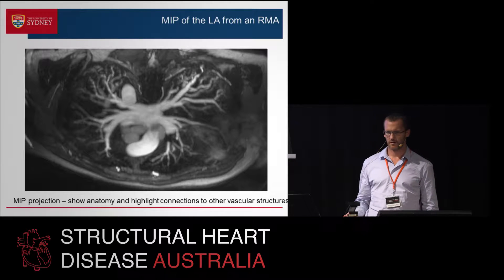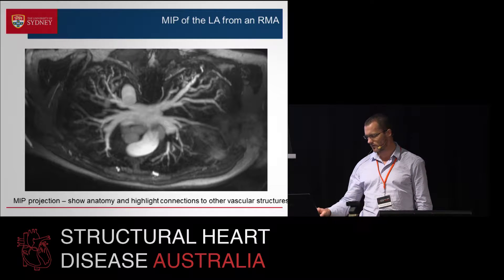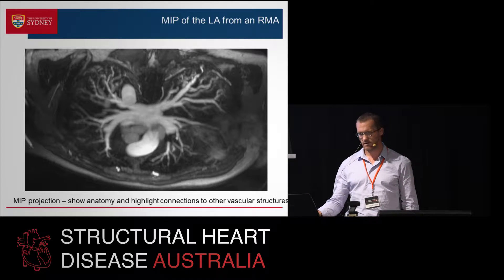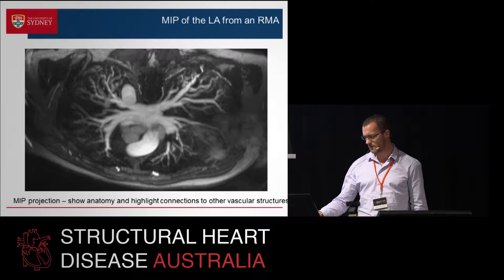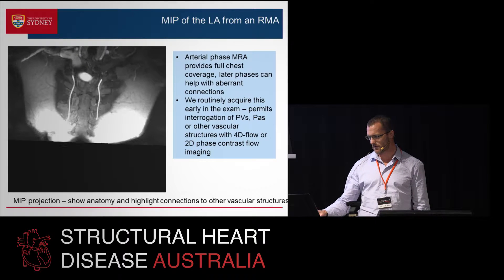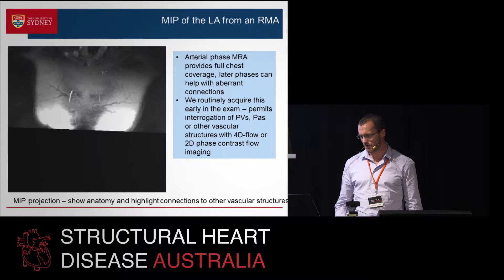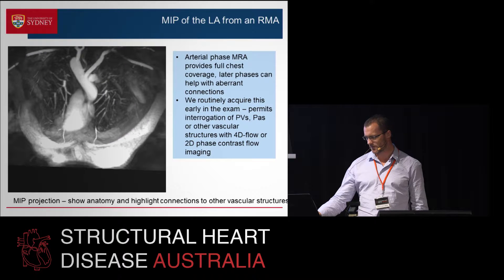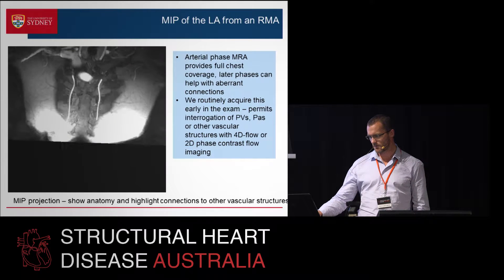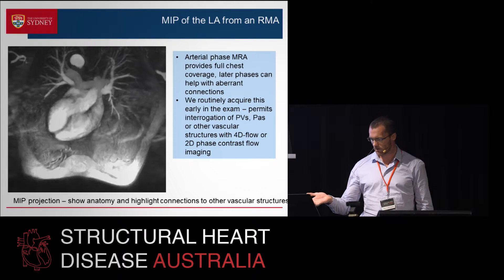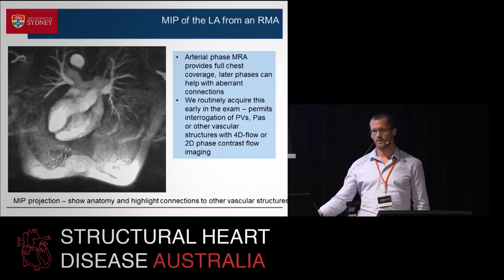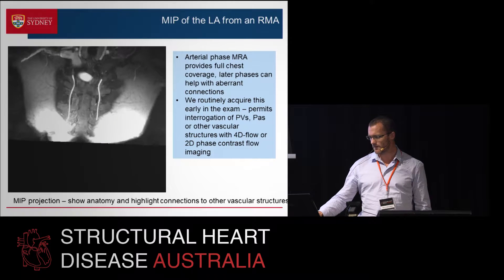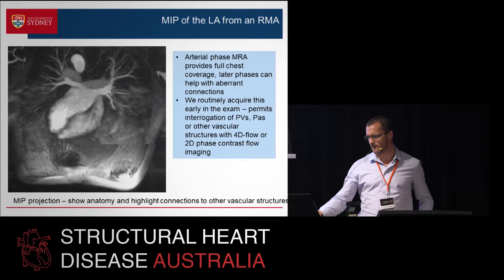Here's a MIP projection. I quite like these. Most radiologists do because in one view you can see all the connections, and any aberrant connections will pop out very quickly using that kind of method. Here we're just looking at a coronal view. MRAs are extremely useful. You get similar anatomical information to that which you can get using CT angiograms that are adequately timed.